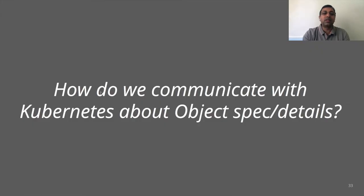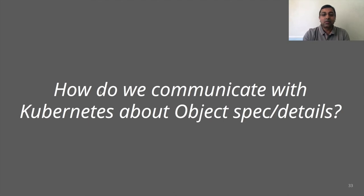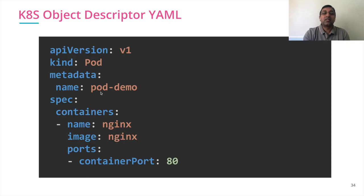The question that comes up is: how do we communicate with Kubernetes about object specification and details? What we are looking at is a programmatic way so that we can communicate all the details in an infrastructure-as-code approach. In Kubernetes, object descriptor YAMLs are used heavily to specify or provide commands to the Kubernetes cluster about what is requested.